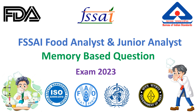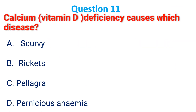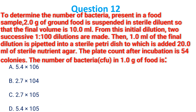Hello friends, welcome back to our channel. Today we are discussing memory-based questions of Food Analyst and Union Analyst 2023 exam. Let's start. Calcium and Vitamin D deficiency causes which disease? The correct answer is B: Rickets.